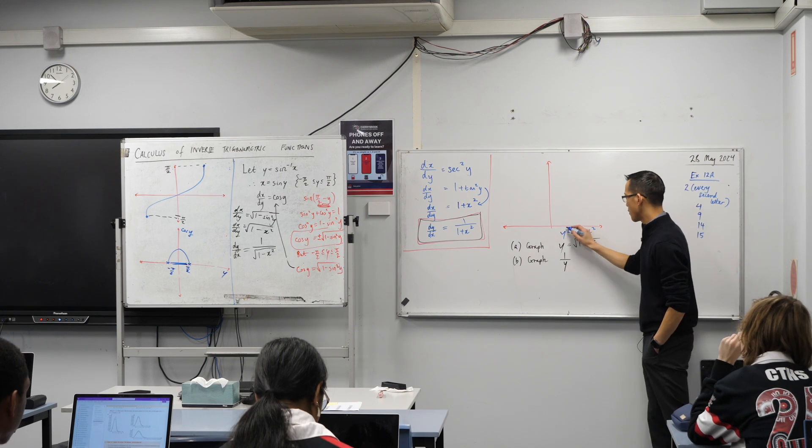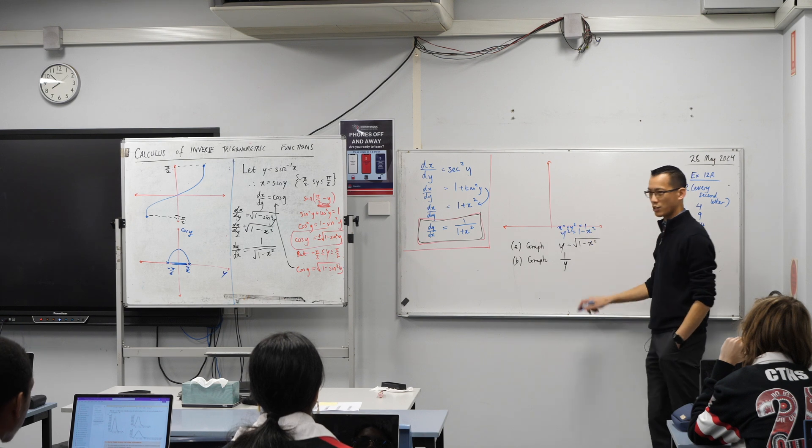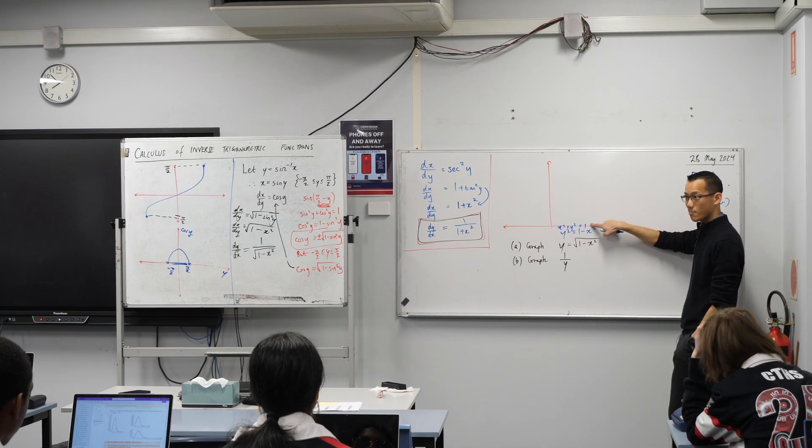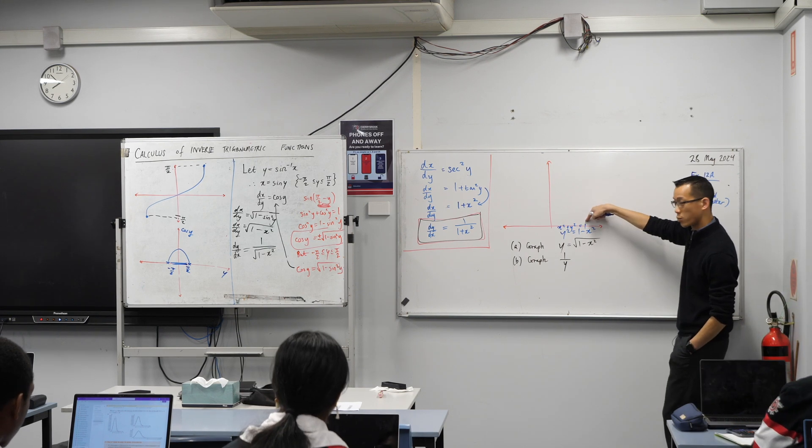And then I'm going to ever so slightly rearrange by adding x squared to both sides. So what is this top line? That's the unit circle. It's a circle. It's the unit circle because the radius is one.